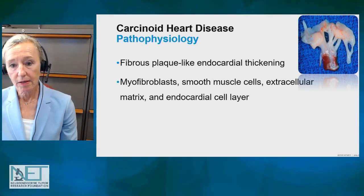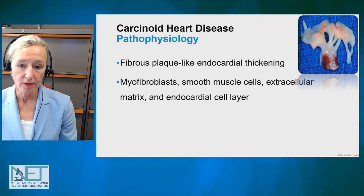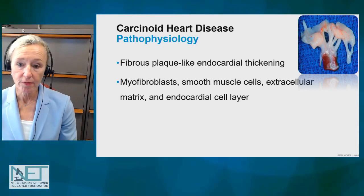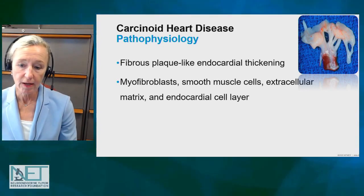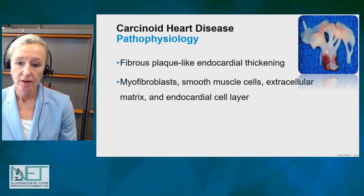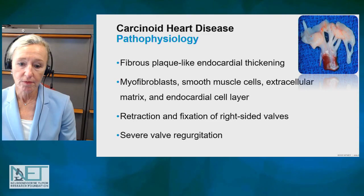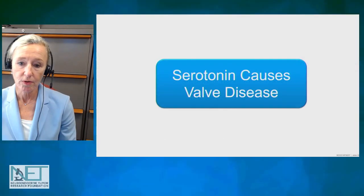So ultimately, the serotonin-rich blood causes thickening and abnormal function of the valves. If you're interested in the pathobiology, it's myofibroblasts and smooth muscle cells that get laid down on top of the valve structure and cause these valves to become thickened and inefficient and ultimately cause leakage of the valve. Backflow of one or both of the right-sided valves is generally what occurs.